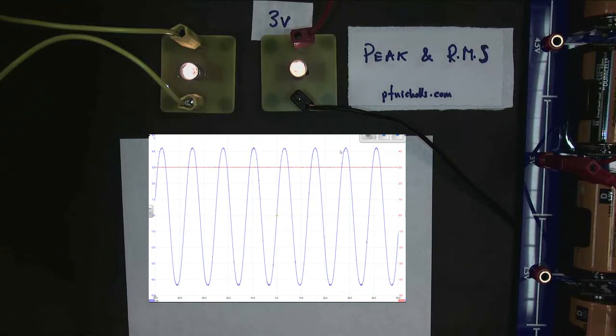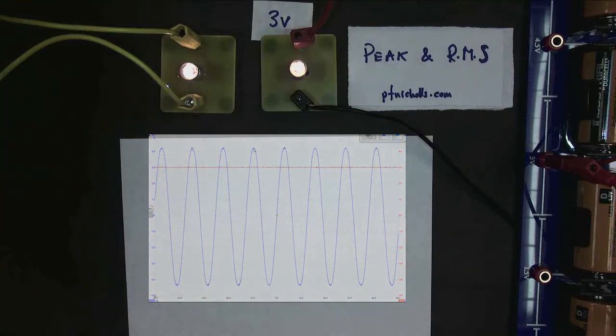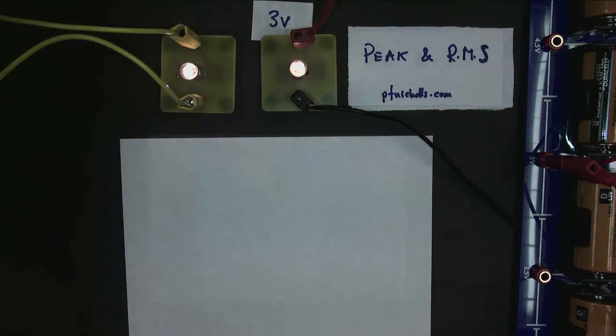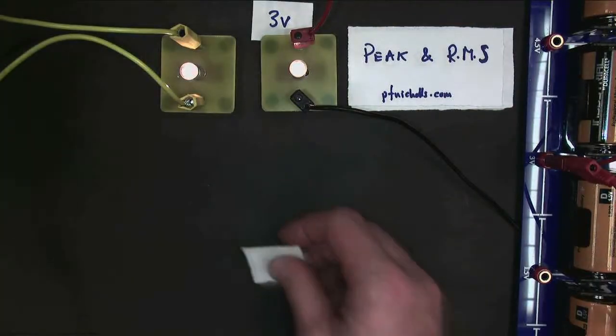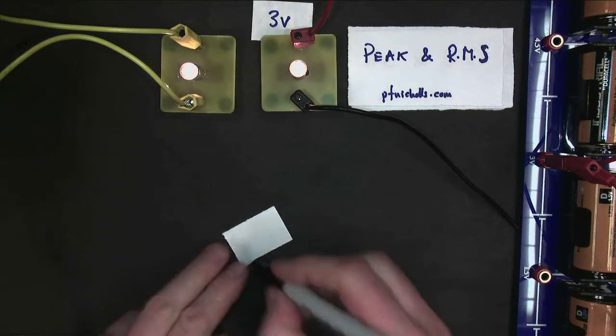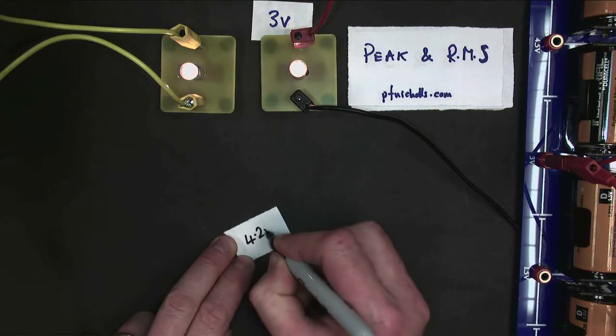Let's read what value it is. It's about 4.19, 4.2 volts. So, get rid of the oscilloscope and label this one as 4.2 volts.